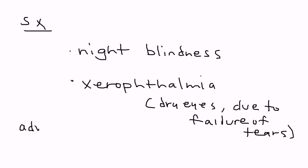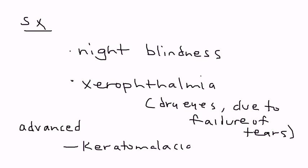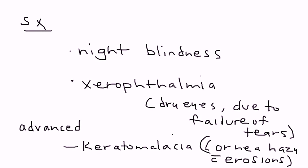In advanced cases of vitamin A deficiency, you have keratomalacia, where the cornea can actually become hazy and erosions can develop on the surface, which can be detected on an eye exam. Another thing that's a bit rare but can happen is alopecia, where the hair starts falling out.